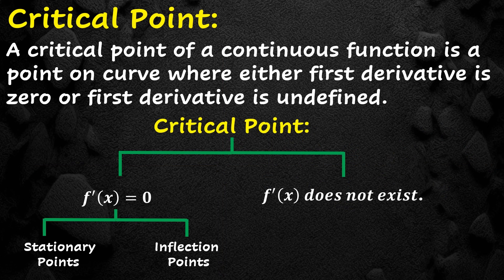Now we come to the second case of critical points: when the first derivative does not exist at a certain point of a curve, that point is also a critical point. Let's explain this with an example.